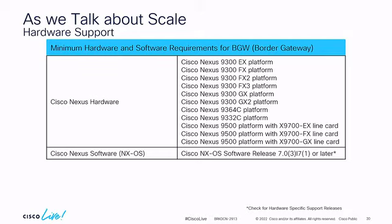The 9400 and 9800 are not yet shipping. From an NX-OS version standpoint, we started at 7.0(3)I7(1) in 2017; today we're at 10.2(3)F — the latest version. We added hardware as it showed up and baked it into NX-OS, so we have a five-year feature implementation in our code, hardened on scale and convergence with new use cases coming in. Many of these features came from feedback you gave us at Cisco Live.